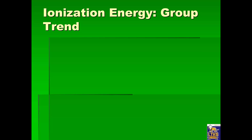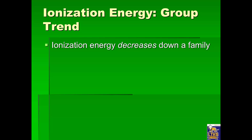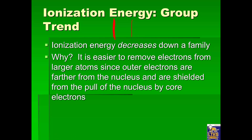What's the trend in ionization energy? Well, here's the group trend: ionization energy decreases going down a group or family. Why? Because atoms get bigger as you go down. If you're trying to take an electron away and the electrons are really far away from the nucleus, it takes less energy to remove them because they're not feeling the pull of the nucleus. Outer electrons in big atoms are shielded by all the electrons in between the nucleus and the outer shell.